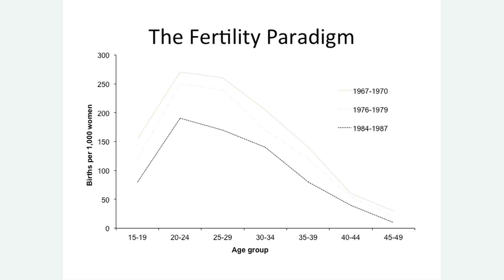As we go through the decades, you see that there's a shift — mothers are becoming older, and we see more women having children in their 30s. But overall, notice that the size of families, or the number of children that people have, is reducing quite significantly over the last four decades. We still see a drop in fertility starting at the age of 30, with a significant drop at the age of 35, and a massive drop at the age of 40.